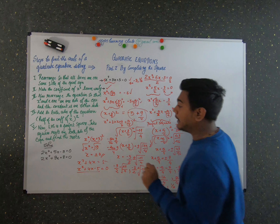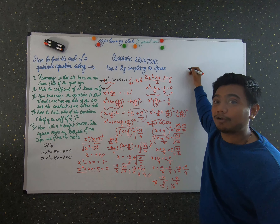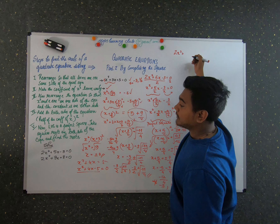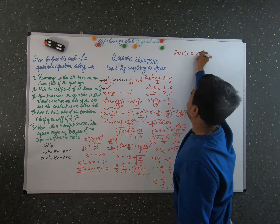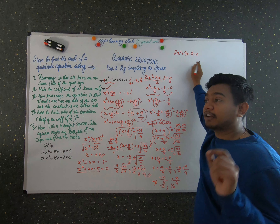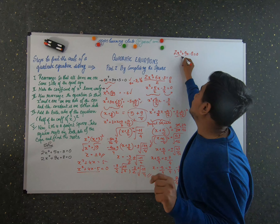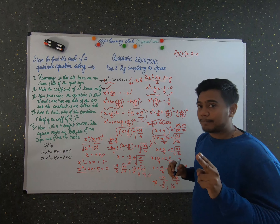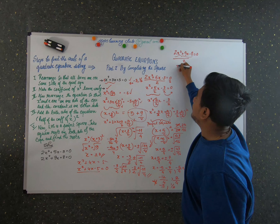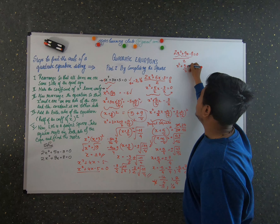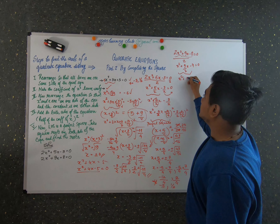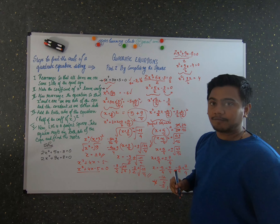Now let's do the last problem so you get a better understanding. The equation is 2x² + 9x − 8 = 0. Step one: all terms are already on one side. Step two: divide by 2 to make the x² coefficient unity — giving x² + (9/2)x − 4 = 0. Step three: move the constant to the other side — x² + (9/2)x = 4.